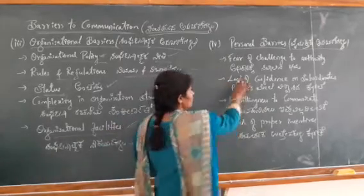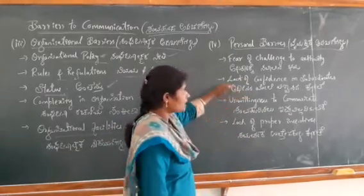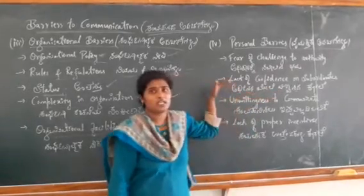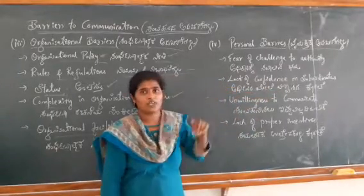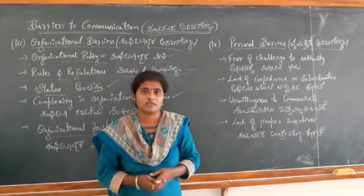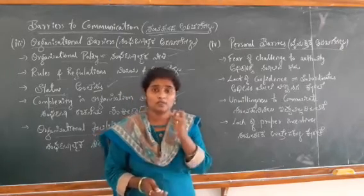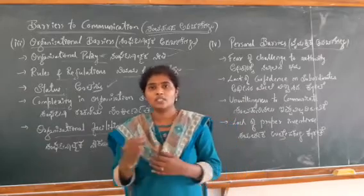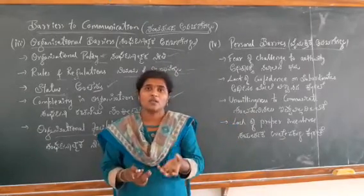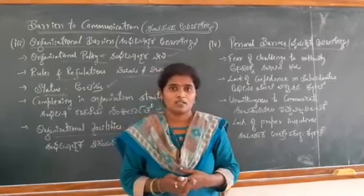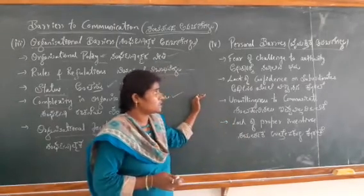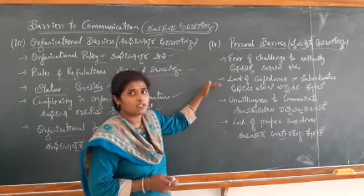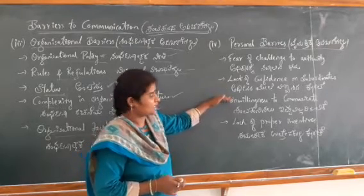Next is lack of confidence on subordinates. If supervisors do not have confidence with the subordinates, then they cannot communicate easily. The supervisor must have confidence with their workers or subordinates — then only can they easily communicate and give information to the receiver. If there is no confidence with the subordinates, then personal barriers arise in the organization.